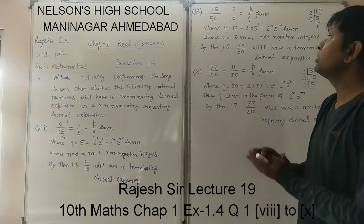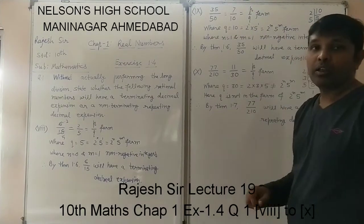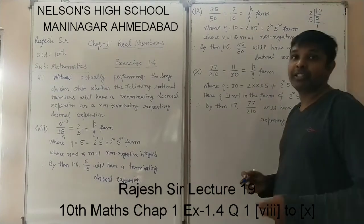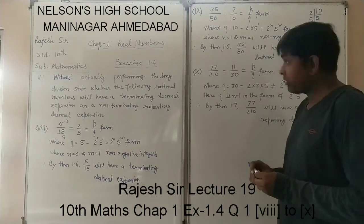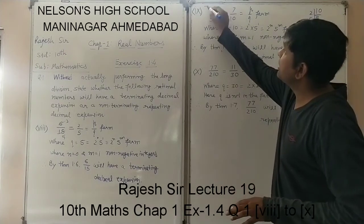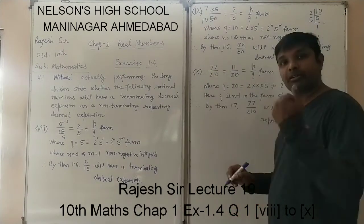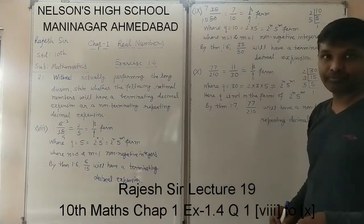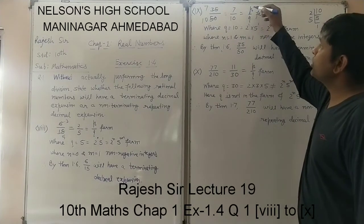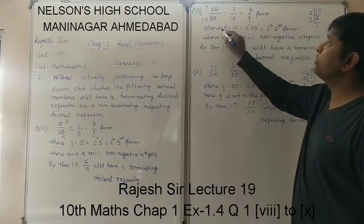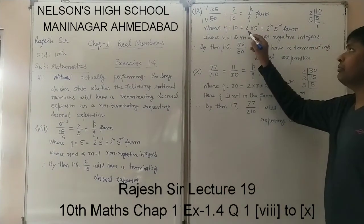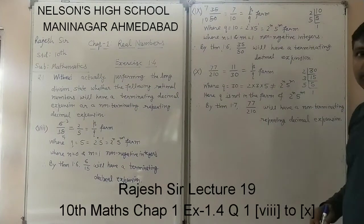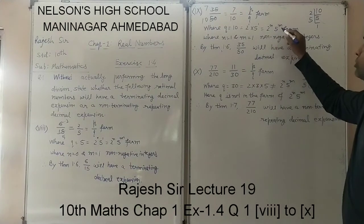Similarly, question 9 is 35 upon 50. Here there is a common factor between 35 and 50, which is 5. Dividing both by 5 gives the simplest form: 7 upon 10. Now Q equals 10, and 10 can be written in prime factorization form as 2 raised to 1 and 5 raised to 1.